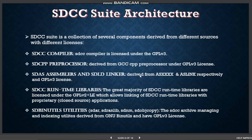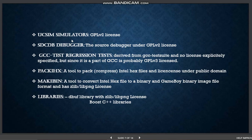The assemblers and linker are derived from ASXXX and ASLINK respectively and have GPLv3 license. The runtime libraries — a majority are under license GPLv2 LE, which allows linking of SDCC runtime libraries with proprietary applications. The archive managing and indexing utilities are derived from GNU binutils, which have GPLv3 license. The USIM simulators have GPLv2 license. The SDCDB debugger is the source debugger under GPLv2 license.